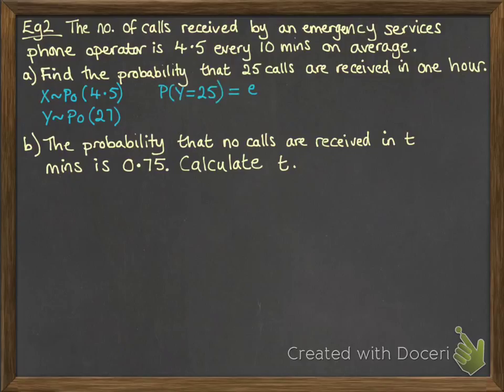And then we want the probability that Y equals 25. So we put it into our formula and we get 0.0737.